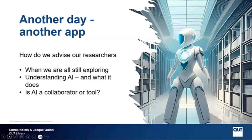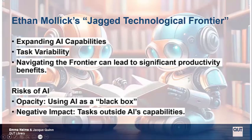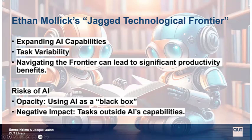The real question is, is Gen AI a collaborator or a tool? I recommend having a look at Ethan Mollick's article on the jagged technological frontier. He looks at expanding AI capabilities. AI covers an expanding but uneven and unknown set of knowledge work, and there is some task variability. Some tasks are easily done by AI, while others, though seemingly similar, are beyond AI's current capabilities. So we need to learn how to navigate the frontier to really lead to some significant productivity benefits.